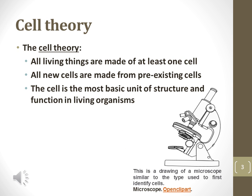Cell theory was developed hundreds of years ago based on the observations of the leading microbiologists of the day. Cell theory states that all living things are made of at least one cell. All prokaryotes, like bacteria, are made of only one cell. The theory also states that all new cells are made from pre-existing cells, which can occur through simple budding division or, more complicated, sexual reproduction.